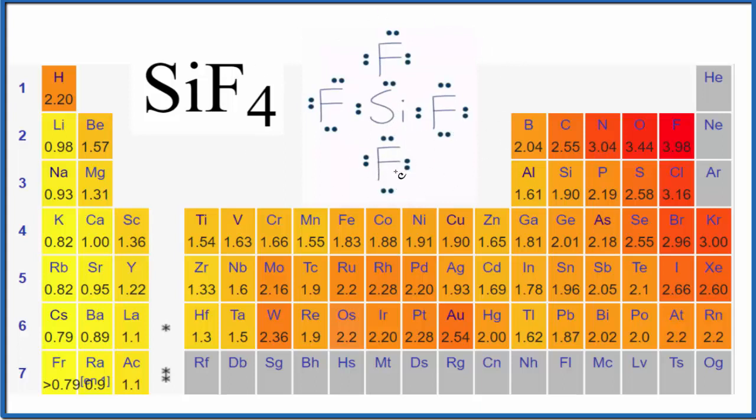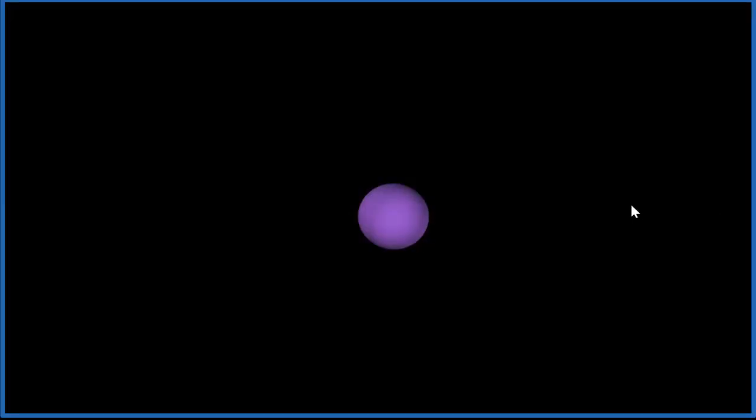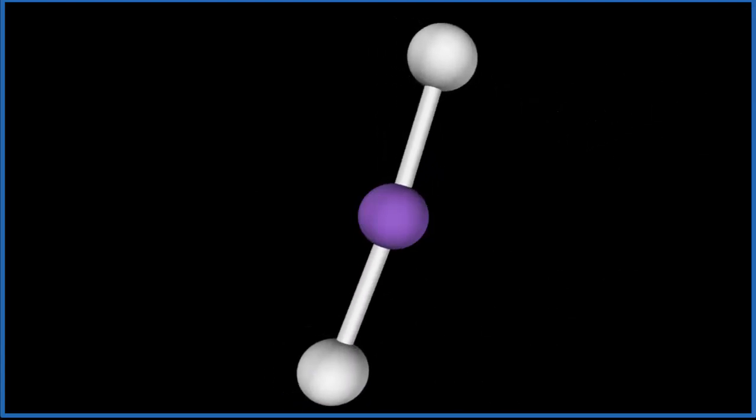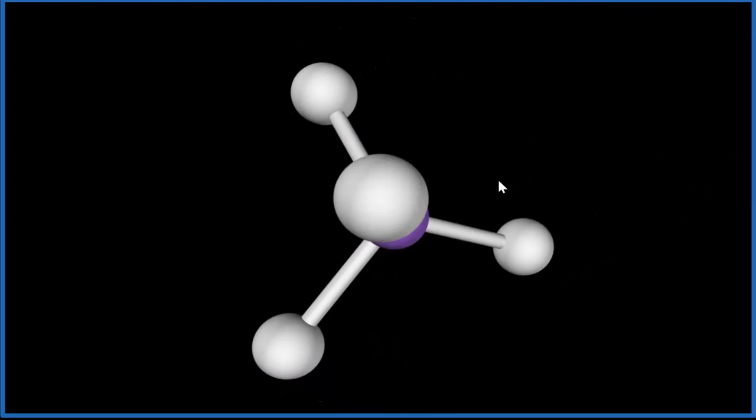The central atom here, that'll be our silicon. Let's add four of those fluorine atoms - one, two, you see them spread out, three, four. So we end up with a tetrahedral molecular geometry for SiF4.